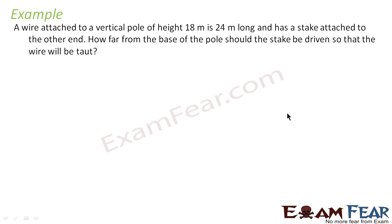Let's take another example. A wire attached to a vertical pole of height 18 meters is 24 meters long and has a stake attached to the other end. How far from the base of the pole should the stake be driven so that the wire will be taut?